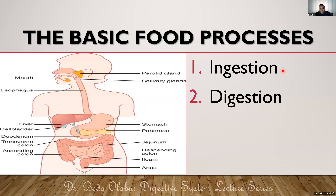After ingestion, food becomes digested. Digestion is the enzymatic breakdown of food into absorbable units, which are usually smaller. The food substances that need to be digested are the large ones like carbohydrates, lipids, and proteins — we do not necessarily digest vitamins as they are already in their absorbable units. The primary site for digestion of food is the duodenum and the jejunum, which confirms why the duodenum receives pancreatic juice that helps in digestion.